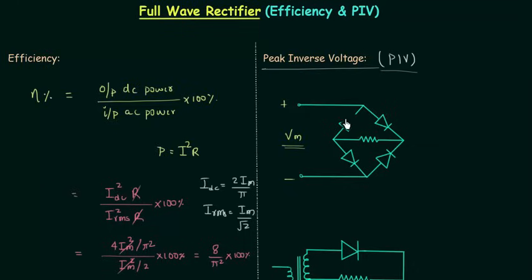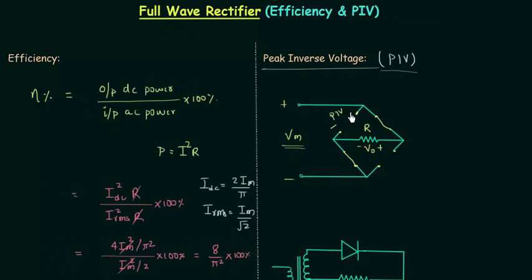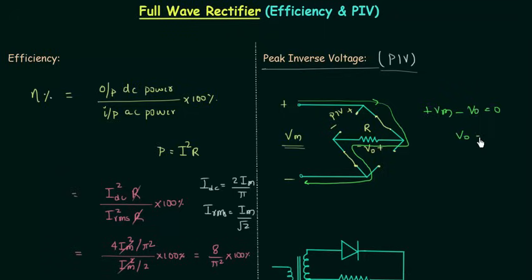We have to work with the maximum input voltage Vm. The two reverse-biased diodes are replaced with open circuits, and the two forward-biased diodes are replaced with short circuits, considering ideal diodes. The resistance is R and voltage across it is V0. Using Kirchhoff's voltage law: plus Vm minus V0 equals 0, so V0 equals Vm.